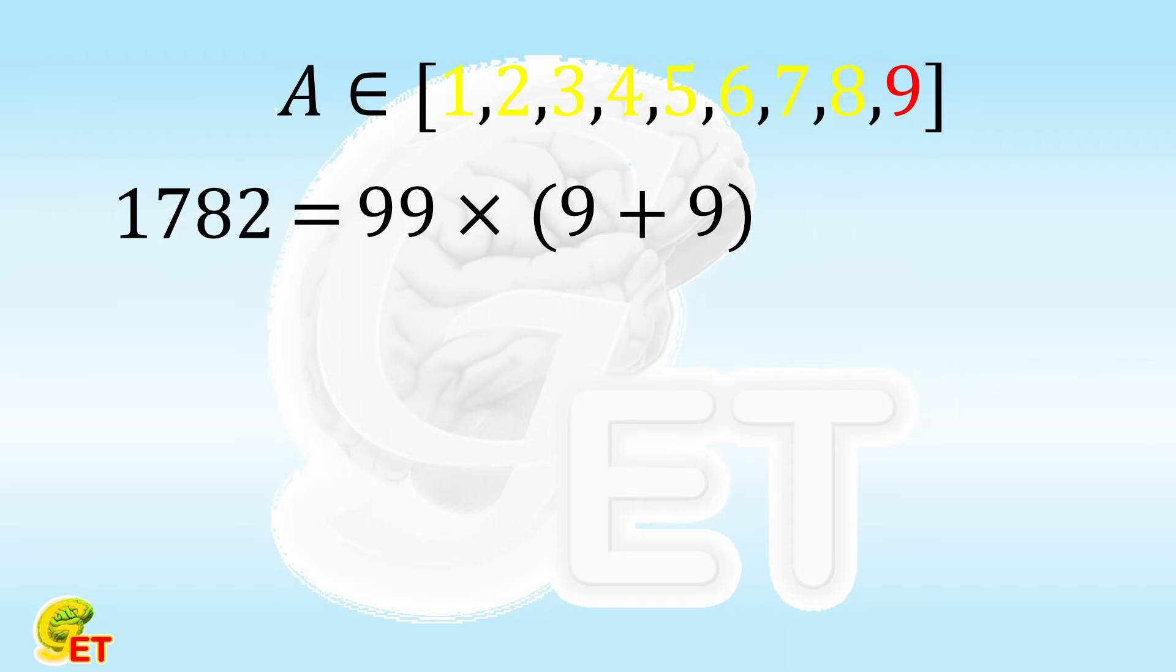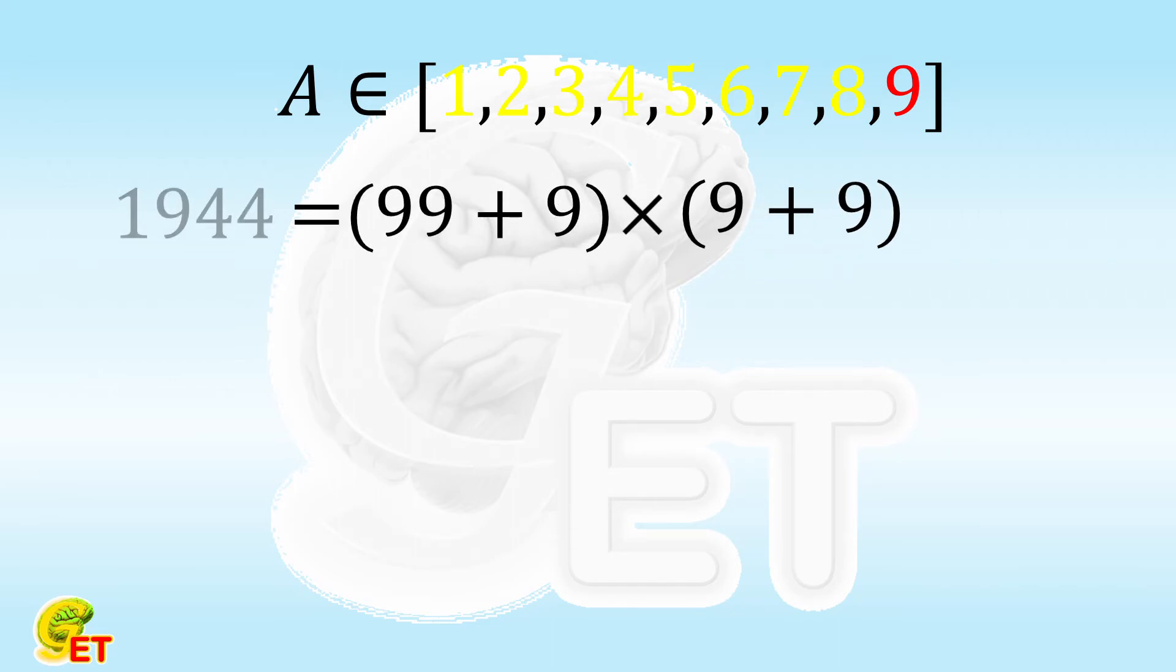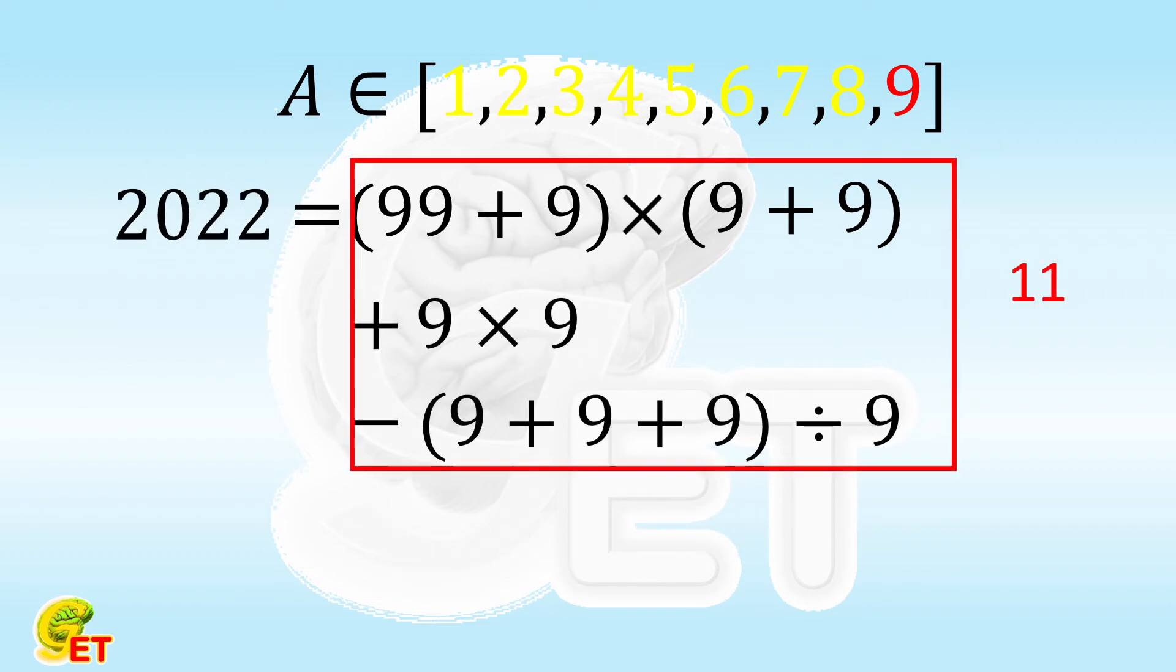So we replace 99 with 99 plus 9. And we get 1944, and that's a bit nicer. 1944 is 2022 minus 78. And 78 is 9 times 9 minus 3. So we use 9 for 11 times in total.